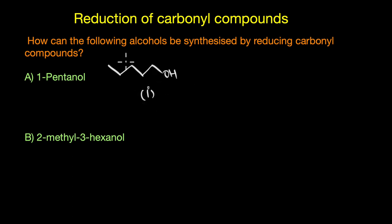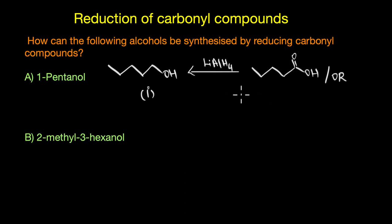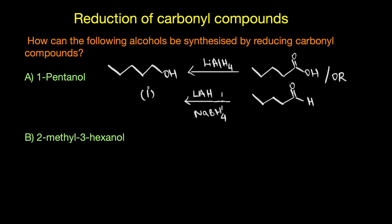To obtain 1-pentanol, the starting acid should be pentanoic acid, or an ester where the OH is replaced by an OR group. Pentanoic acid on reduction with lithium aluminium hydride gives 1-pentanol — sodium borohydride cannot reduce acids. We can also obtain the same primary alcohol by reducing pentanal using either lithium aluminium hydride or sodium borohydride.